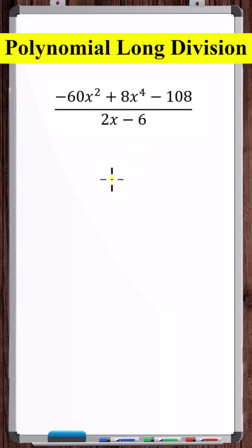Let's divide these two polynomials using polynomial long division. Let's first write the dividend in descending order. We need to use placeholders for missing terms with zero coefficients.